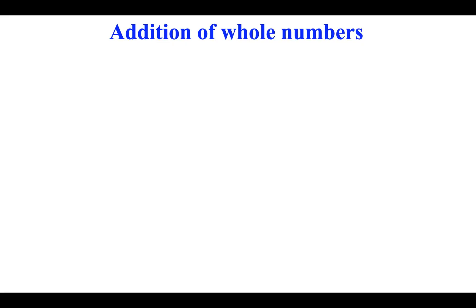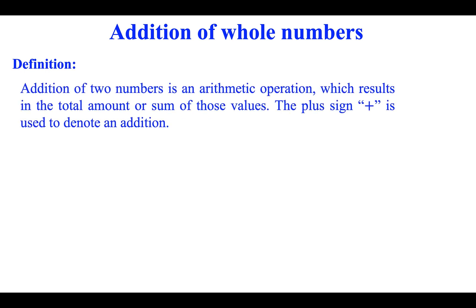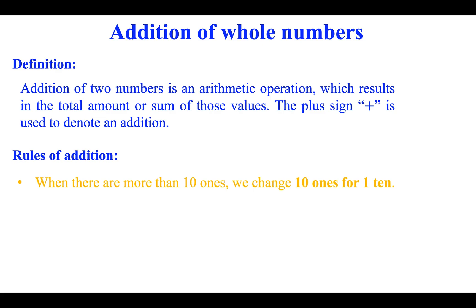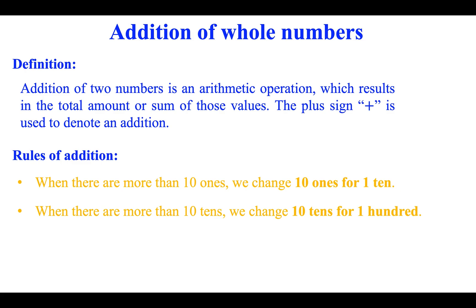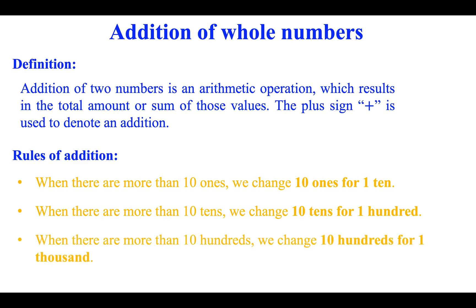Addition of whole numbers. Addition of two numbers is an arithmetic operation which results in the total amount or sum of those values. The plus sign is used to denote an addition. Rules of addition: when there are more than ten ones, we change ten ones for one ten. When there are more than ten tens, we change ten tens for one hundred. When there are more than ten hundreds, we change ten hundreds for one thousand.